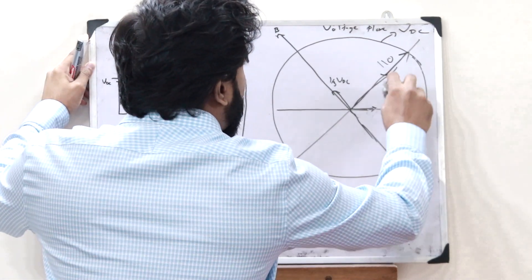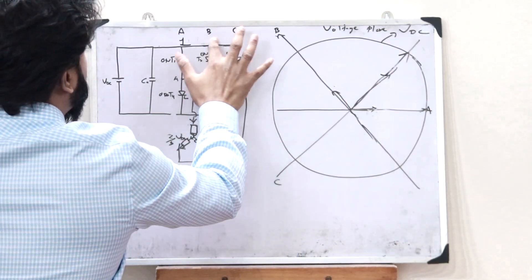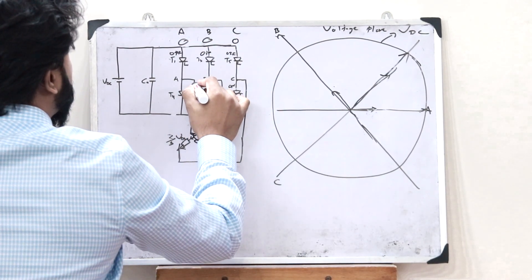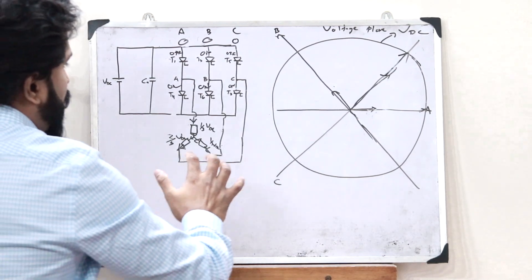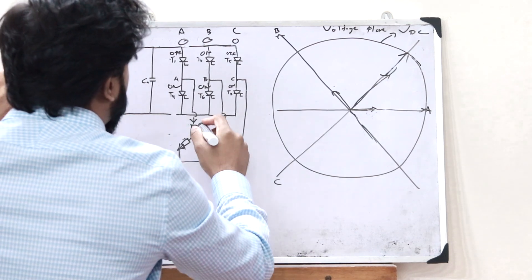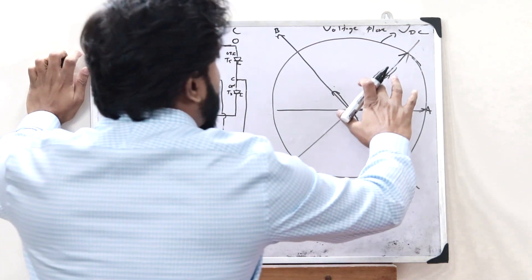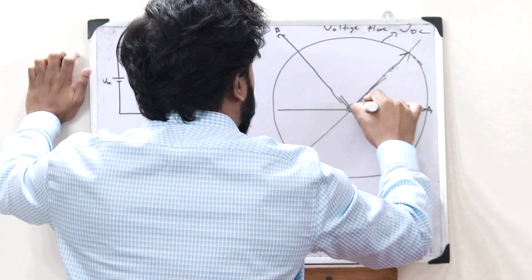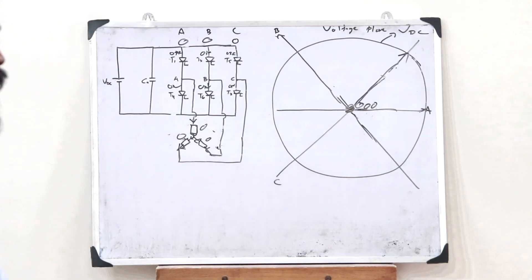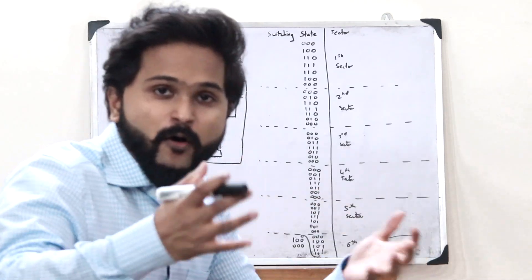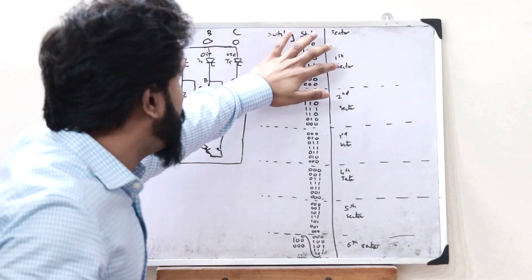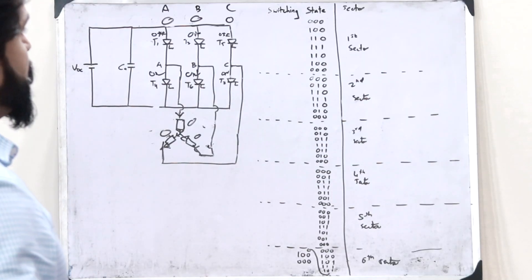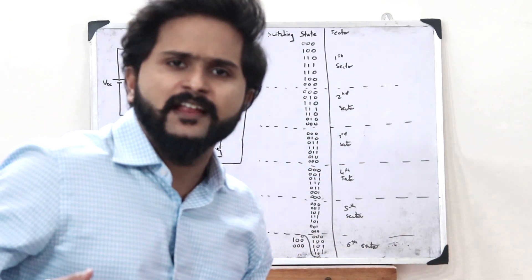Let us consider the condition where all switching states are 0. All the top switches are OFF and only the bottom switches are ON. In this case there is no voltage across these particular loads — it is 0, 0, 0. Therefore the space vector is at the origin — we get a point at the origin. I have tabulated the switching states and their corresponding sectors. These are the various switching states and the sectors they belong to, and we can calculate them just as we did in the previous case.